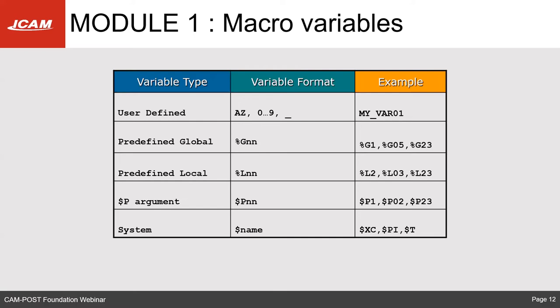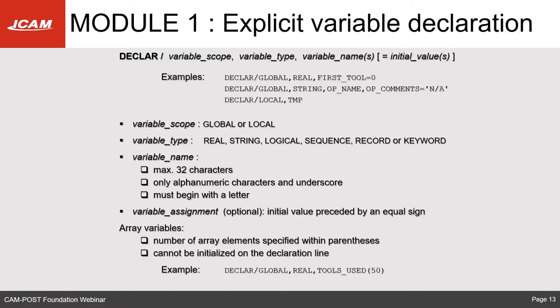The declaration macro is used to declare your global variables, which must be declared there. You can also declare local variables, which is good practice but not mandatory. For example, you can declare a global variable of data type real named 'tool_used' as an array of 50 to store real numbers. System variables are provided by the post processor — some are read-only, some are read-write. A full list is available in the POST230 PDF document in your installation folder.